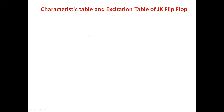Hello everyone. In the previous class we studied the working of the JK flip-flop. Now we will study the characteristic table and excitation table for the JK flip-flop. As I told you in the previous video, the characteristic table gives us the present input and the previous output to predict what the next state or next output will be. Before going to the characteristic table, we should know the truth table for the JK flip-flop.